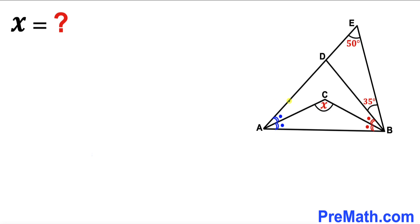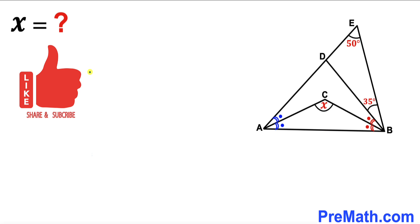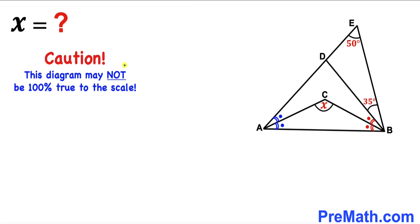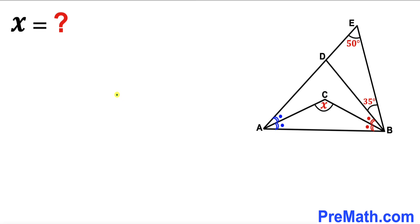Welcome to pre-math. In this video we have a bunch of triangles within a big triangle ABE, such that angle AEB is 50 degrees, angle DBE is 35 degrees, and angle ACB is represented by X. Furthermore, these two blue angles are congruent and likewise these red angles are congruent as well. Our task is to find the value of angle X. Please keep in mind that this figure may not be 100% true to scale.